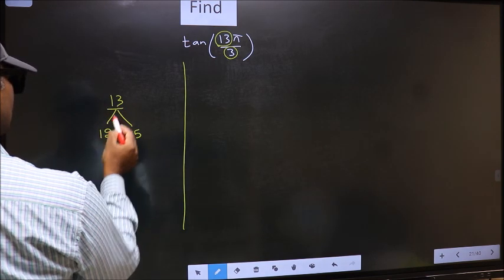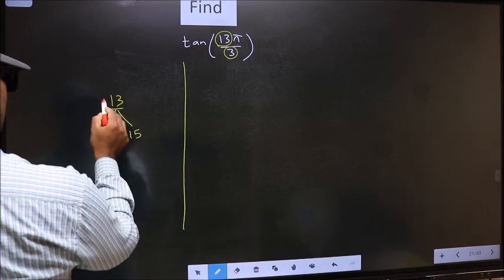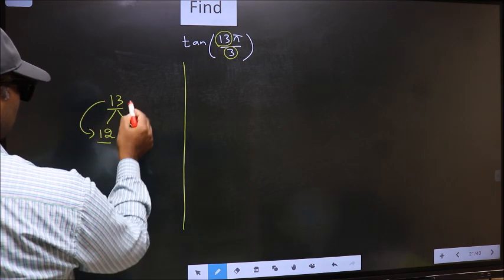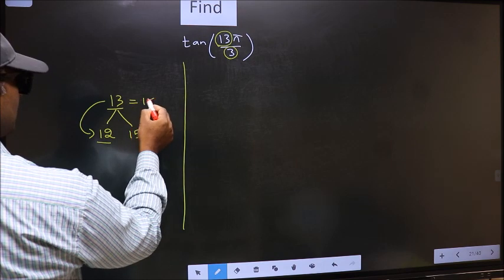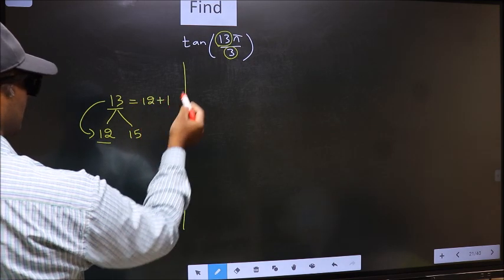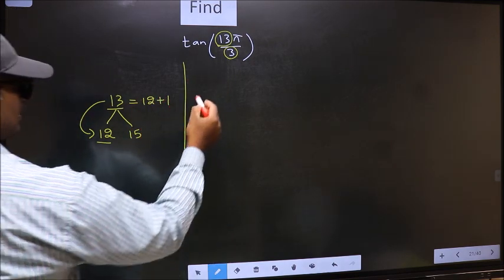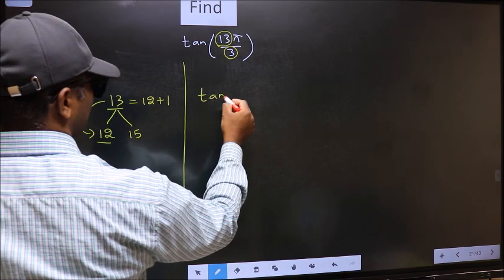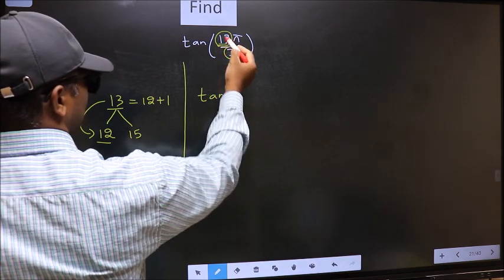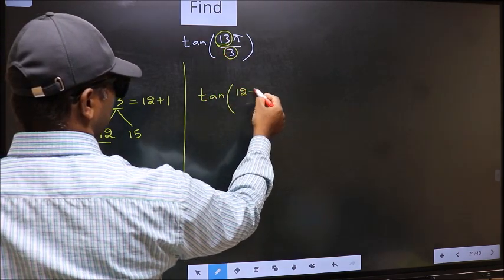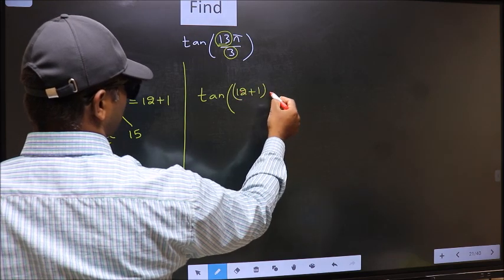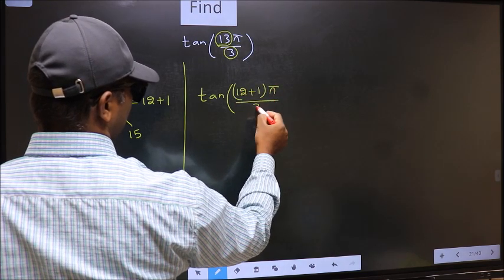Now 13 is close to which number? This is close to 12. So 13 should be written as 12 plus 1. So this will become tan of (12+1)π/3.